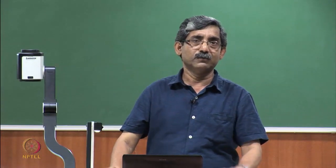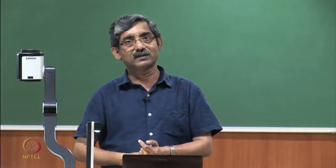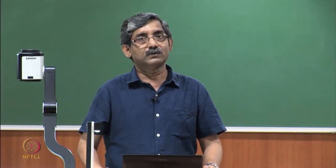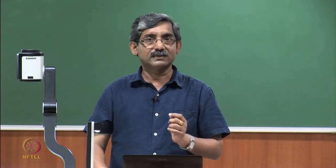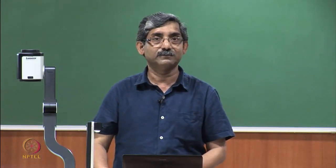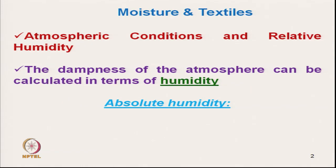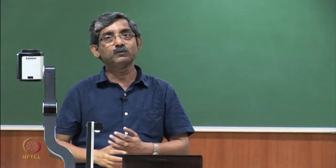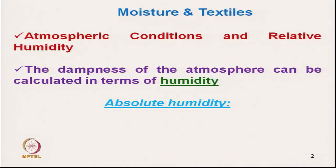Before understanding the moisture presence in textile material, we must understand the atmosphere. It is expressed in terms of relative humidity. What is humidity? Humidity is the dampness of the atmosphere, and it can be expressed in terms of humidity.